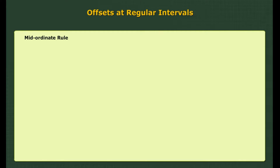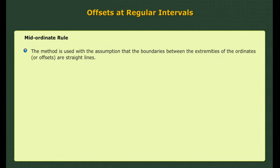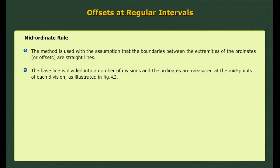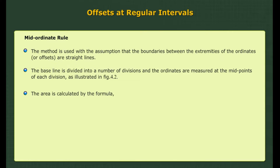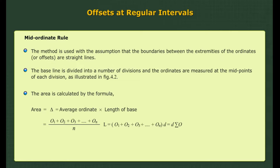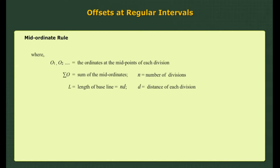Mid-ordinate rule: The method is used with the assumption that the boundaries between the extremities of the ordinates or offsets are straight lines. The baseline is divided into a number of divisions and the ordinates are measured at the mid-points of each division, as illustrated in figure 4.2. The area is calculated by the formula: Area Δ = average ordinate × length of base, where o1, o2, etc. are the ordinates at the mid-points of each division, Σo = sum of mid-ordinates, N = number of divisions, L = length of base line, and d = distance of each division.